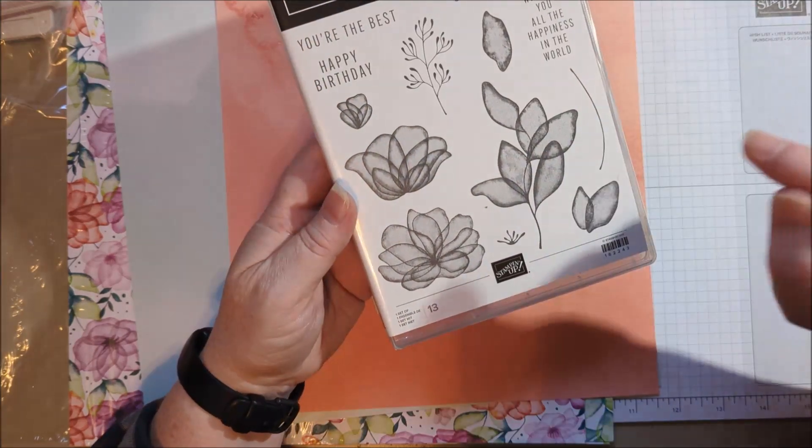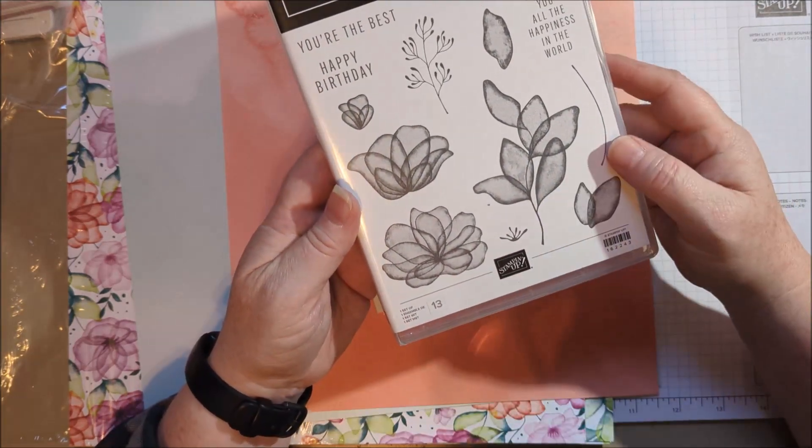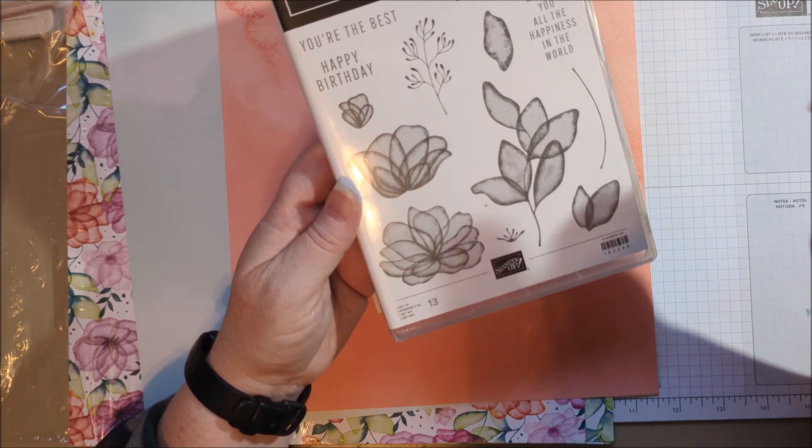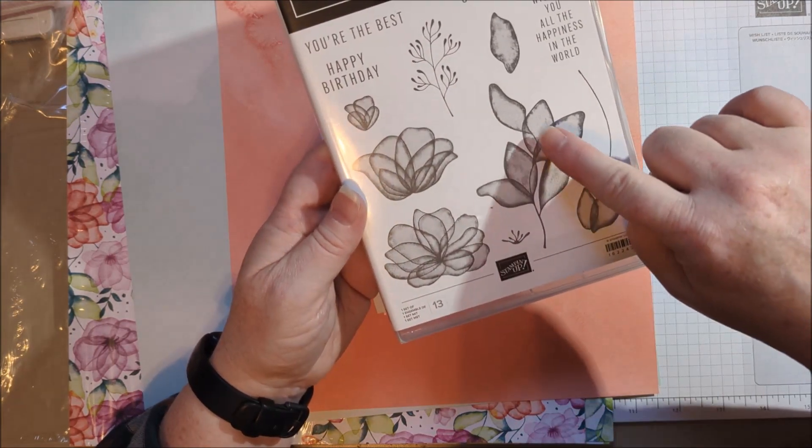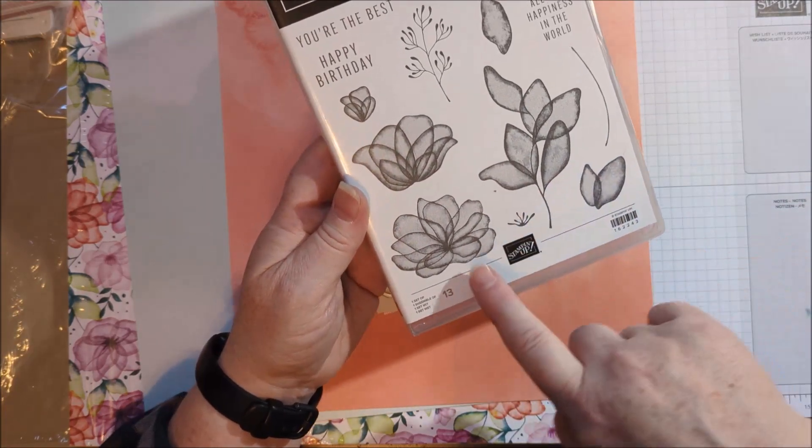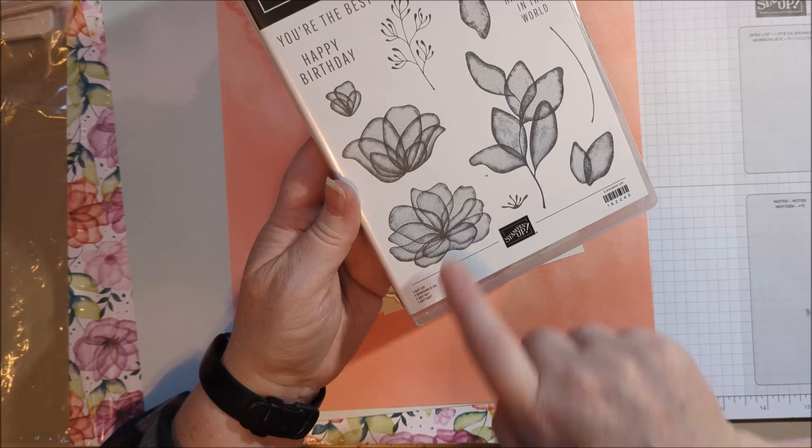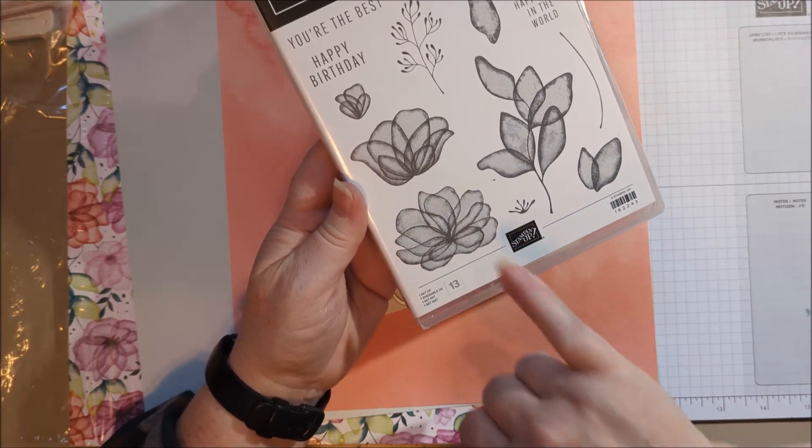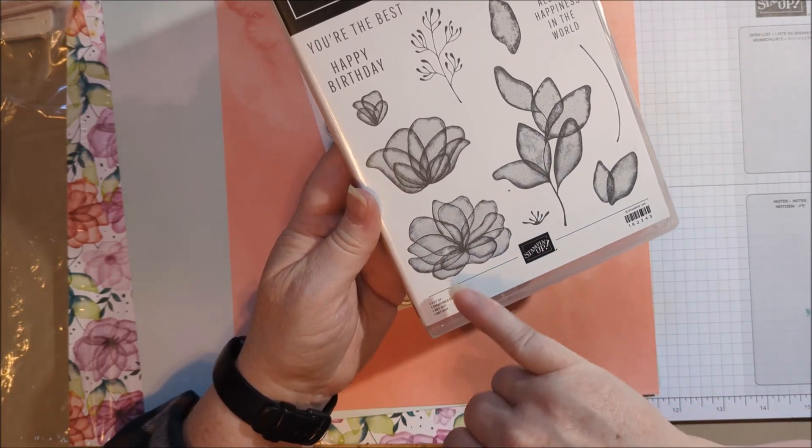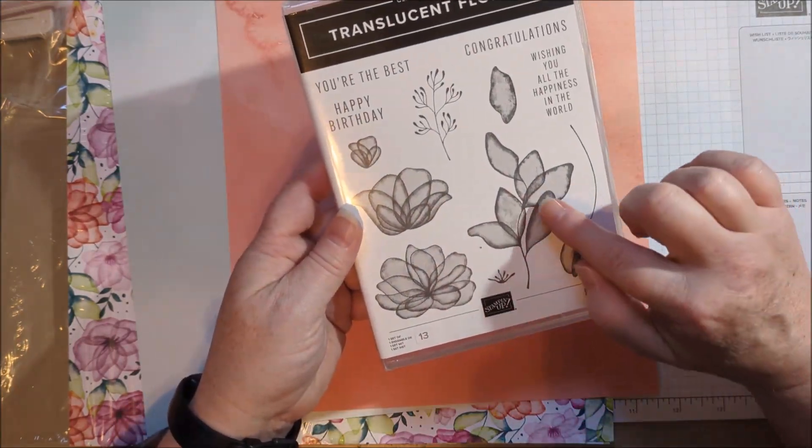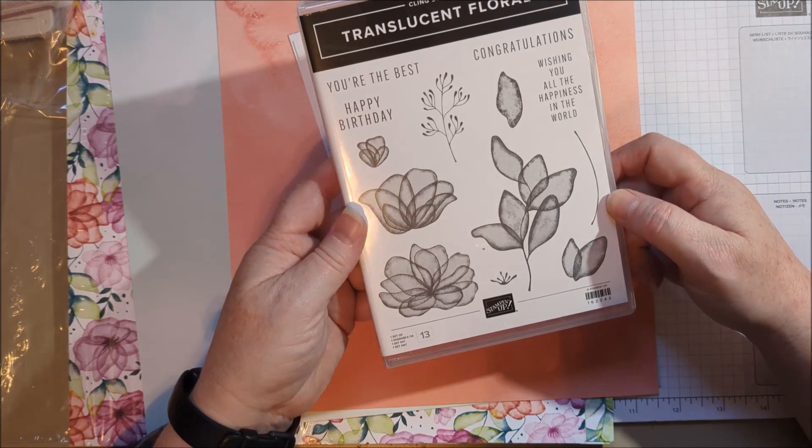In fact, when I showed the card that we're going to make at stamp camp, people thought they were going to have to layer stamps, but it does it all for you. It looks like multiple layers are going on here, but that's one stamp already layered for you to give you these beautiful translucent petals. So that was what everybody thought was so amazing.